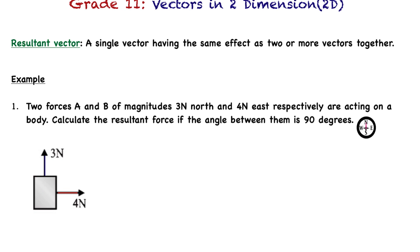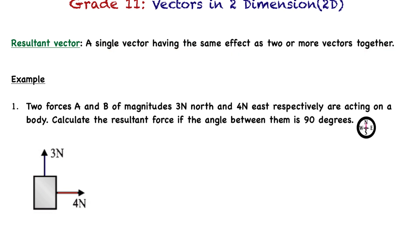One of the most important things is the resultant. The resultant is a single vector having the same effect as two or more vectors together. Remember, when we draw a resultant, we draw it from the tail of the first vector to the head of the last vector. Go back to my previous Grade 10 video for that.